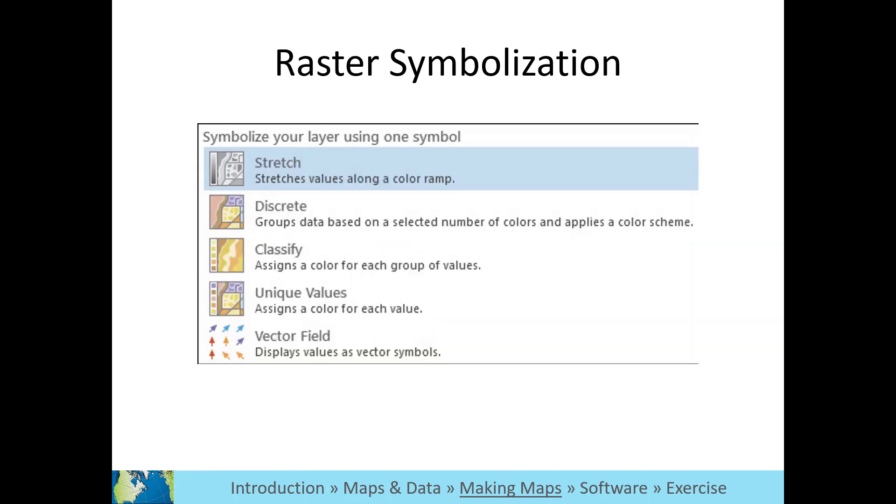Raster data are symbolized differently from vector data. As you saw in the earlier modules about types of spatial data, raster data are a continuous surface.